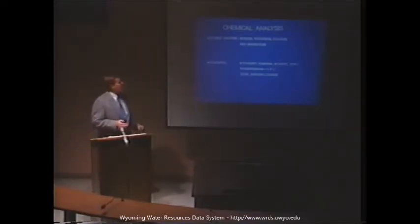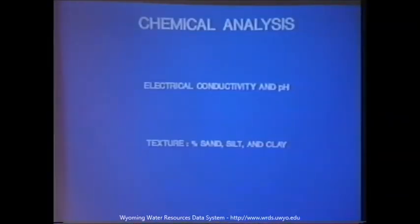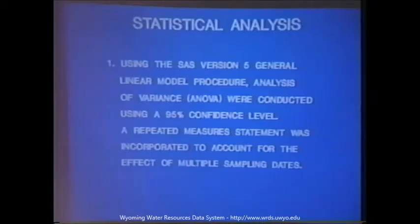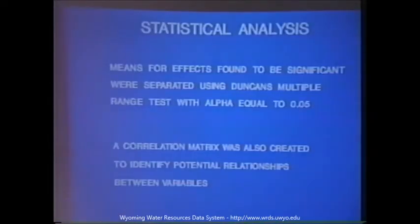Samples were analyzed for soluble cations — sodium, potassium, calcium, and magnesium — nutrients including nitrogen in the forms of ammonia, nitrate, and total Kjeldahl nitrogen, phosphorus as percent phosphorus, total organic carbon, electrical conductivity, pH, and texture — percent sand, silt, and clay. These parameter values were analyzed using SAS version 5 general linear models procedure, performing analysis of variance using a 95% confidence level. We incorporated a repeated measures statement to account for the effect of multiple sampling dates. Means for significant effects were separated using Duncan's multiple range test at alpha equal to 0.05, and a correlation matrix was created to identify potential relationships between variables.